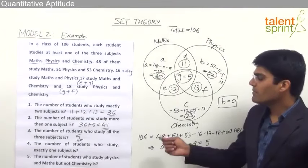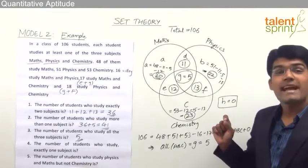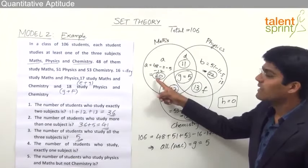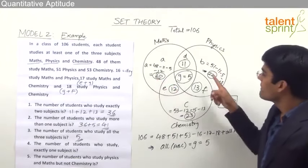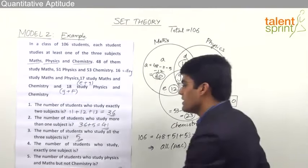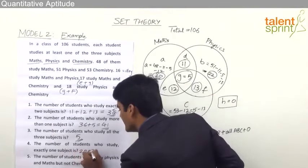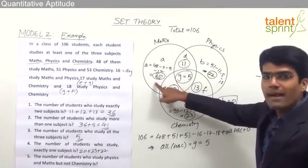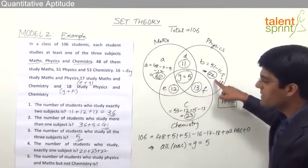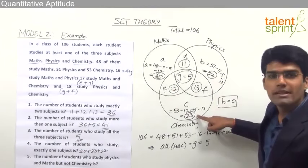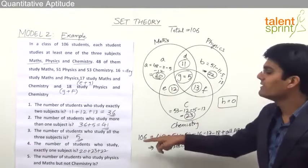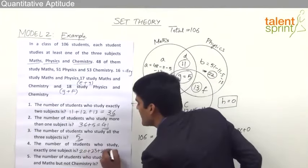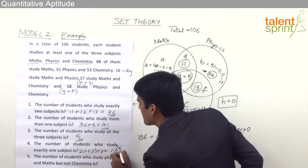Question 4: the number of students who study exactly 1 subject. This is the number studying only Maths, only Physics, and only Chemistry — that is A + B + C = 20 + 22 + 23 = 65. So 65 students study exactly one subject.